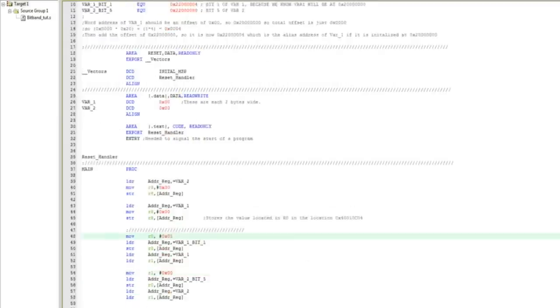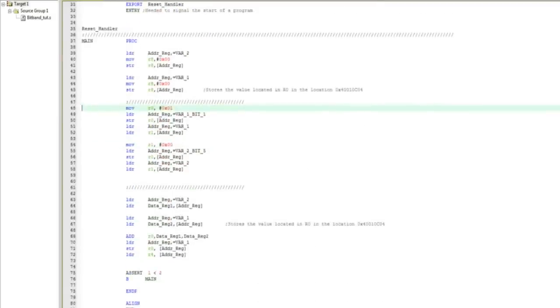Starting at line 48, this is where the bit band code comes in. I first load the value 1 into register 0. This is going to be the value that I write. I then load the alias region memory location into the addr_reg register. I then store the value stored in R0 into the memory location referred to by addr_reg, which means that I will be writing a 1 to variable 1 bit 1 bit alias location. So at this moment, a bit in the bit band region should have been manipulated to change from a 0 to a 1.